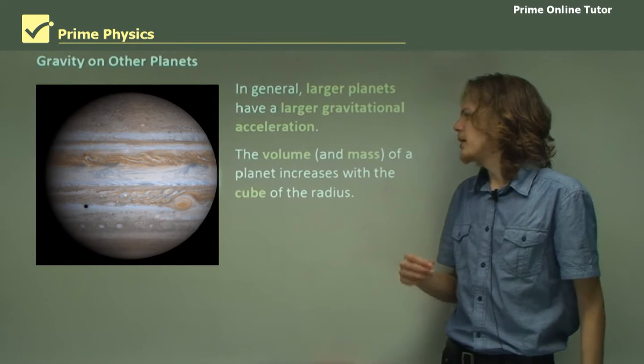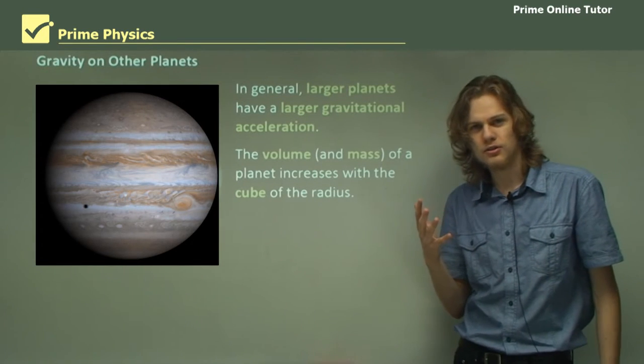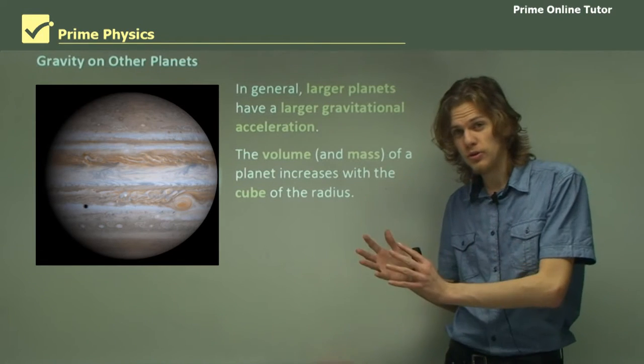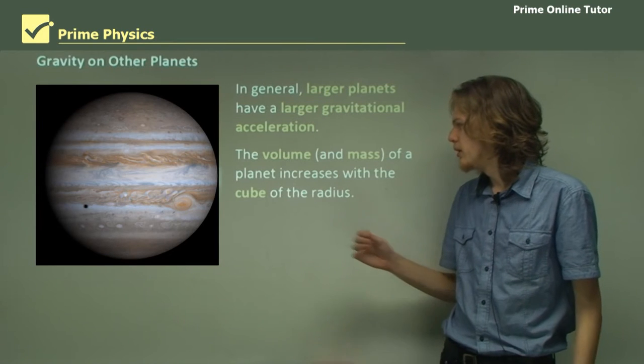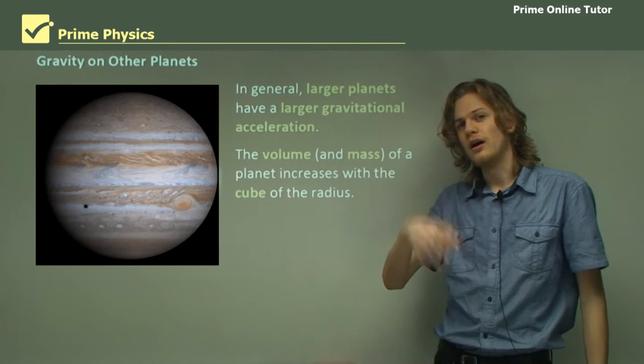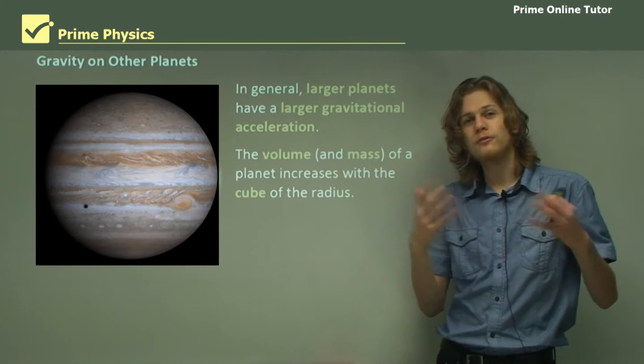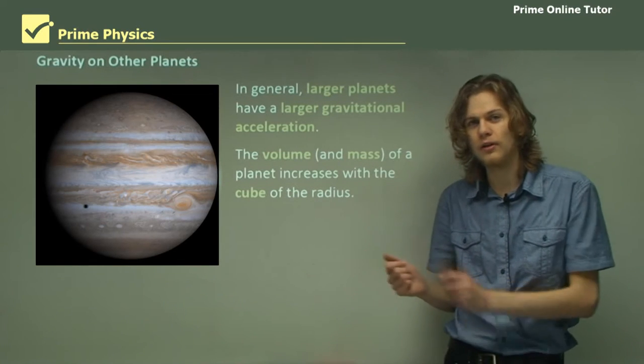The volume of a planet increases with the cube of its radius because the volume of a sphere is four-thirds pi r cubed. As the radius doubles then the volume will increase by a factor of eight because you're cubing that doubling effect.